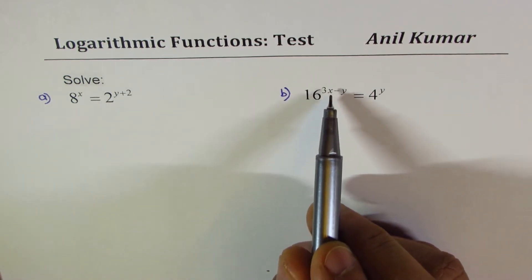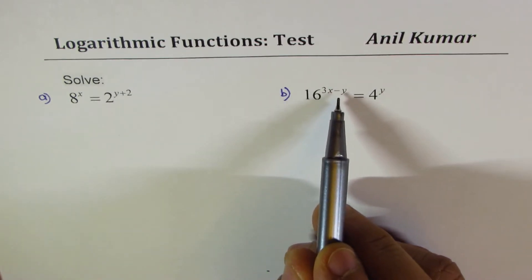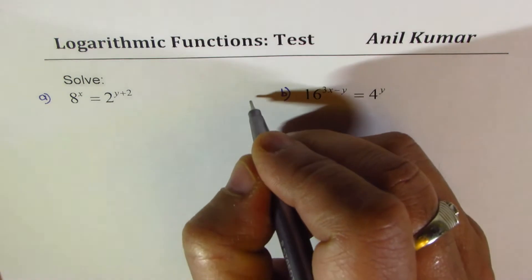Part b is similar in the sense that exponents are again x and y. We have 16 to the power of 3x minus y equals 4 to the power of y. I'd like you to pause the video, copy these questions, solve them, and then look into my suggestions.